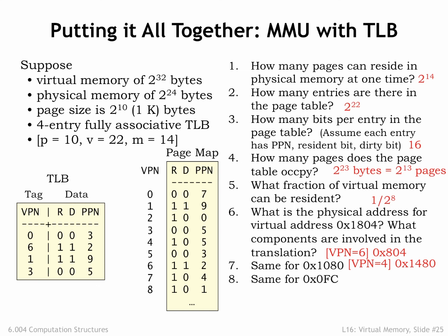Finally, how about virtual address 0xfc? Here the VPN is 0 and the offset is fc. The mapping for VPN 0 is not found in the TLB, and checking the page map reveals that VPN 0 is not resident in main memory, so a page fault exception is triggered.